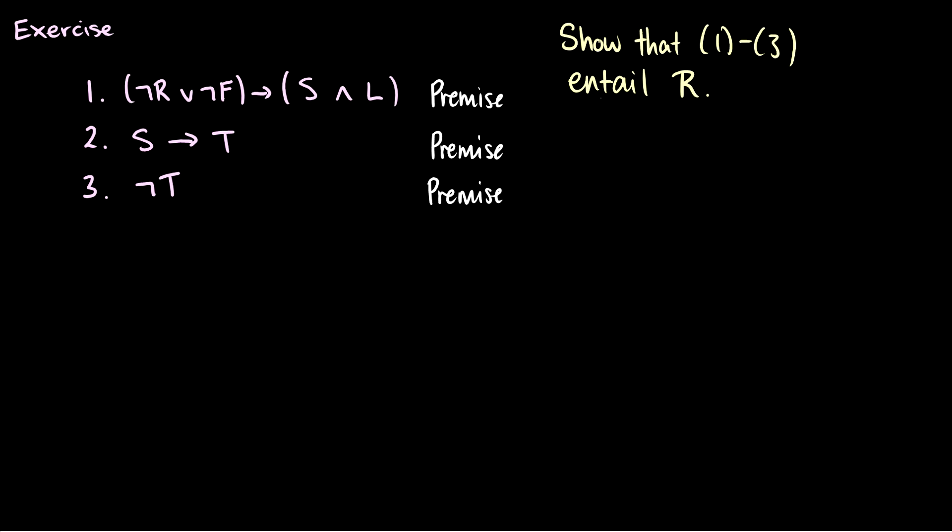Let's do one more example. So I have not R or not F arrow S and L. I have S arrow T and not T. And I want to show that R. And right away you're saying, whoa, this isn't just modus ponens. What's going on? Yeah, it's not always super straightforward. But what do we see? Well, we see not T and we see S arrow T. So I think this is a good time to use modus tollens. So if we have S arrow T and not T, this means we get not S. So this is two, three and MTT.